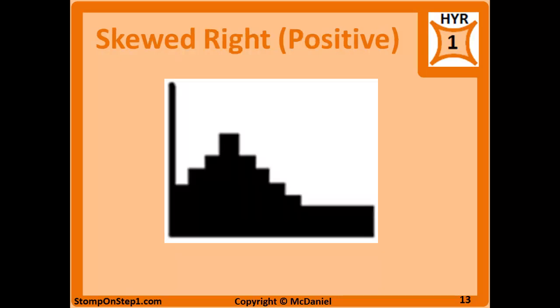The opposite would be skewed right or positive skew. This is one where the tail is to the right side. It looks like a stretched normally distributed graph out to the right. In these cases, the mode is less than the median, which is less than the mean.